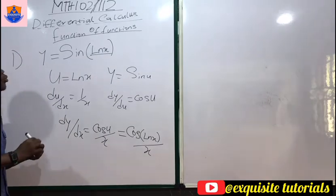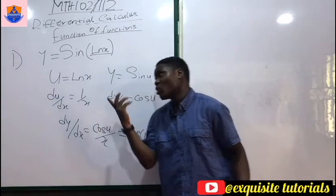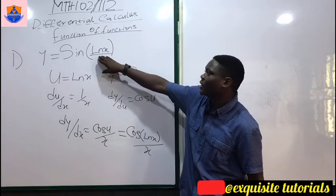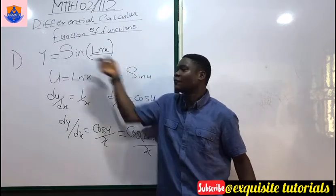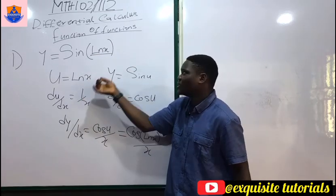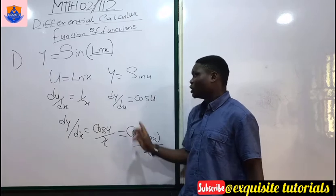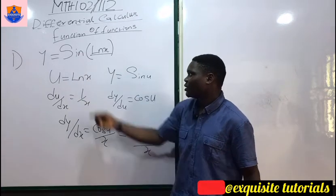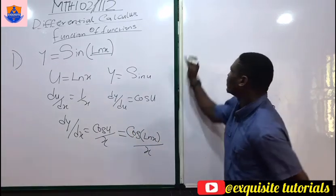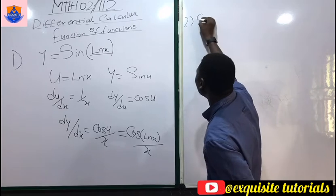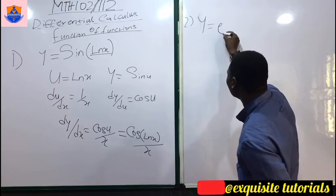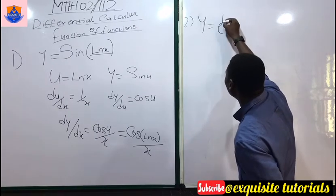Now what if this function of a function has a power? There's a shortcut. When you differentiate sin, you get cos, then you multiply by the derivative of whatever is inside — which is 1/x — giving you cos(ln x) times 1/x.